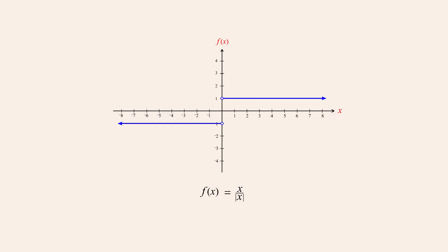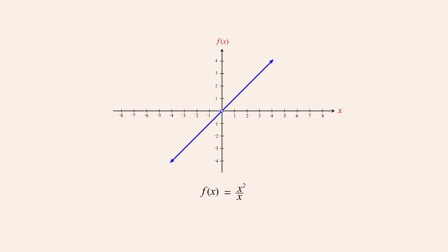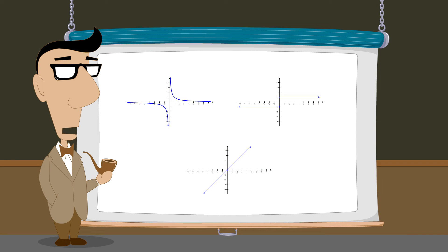An additional type of discontinuity is a single point missing from an otherwise continuous interval of a graph. An example is illustrated by the function x-squared divided by x. The value of x-squared divided by x is the same as f(x) = x for all values of x except when x is zero. In that case, evaluating x-squared divided by x gives zero divided by zero, which is undefined. Therefore, this function's domain includes all values of x except zero, and its graph does not include that single point at the origin. Polynomial functions, however, are continuous and so their graphs have no gaps, jumps, or other discontinuities.